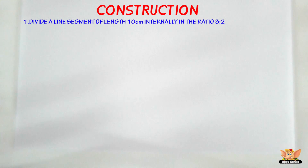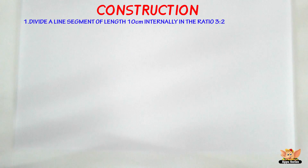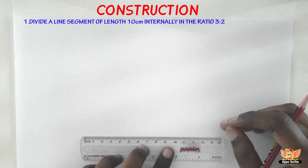In this video, let us learn the method of dividing a line internally in any given ratio. The problem here is to divide a line segment of length 10 centimeters internally in the ratio 3 is to 2. So we've got two important data: the length of the line segment, which is 10 centimeters, and the ratio in which we have to divide it, which is 3 is to 2.